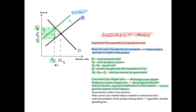For example, if the government puts an indirect tax on cigarettes, consumers pay a higher price, discouraging consumption. Producers receive a lower price, discouraging production, and this may harm employment in the tobacco industry. The government will collect tax revenue, and this may correct market failure related to the overproduction or overconsumption of the product being taxed — which is why indirect taxes appear in markets like cigarettes, alcohol, or gambling.